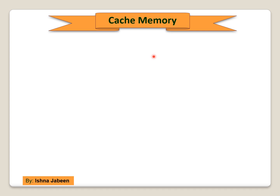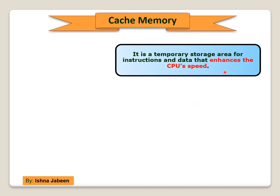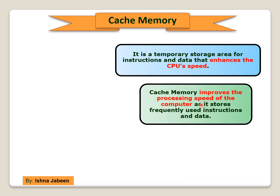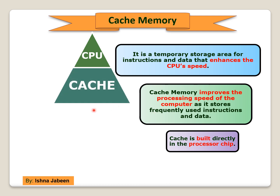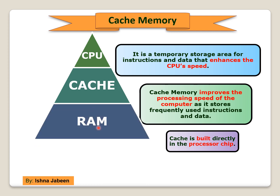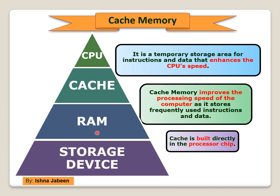Cache memory is a temporary storage area for instructions and data that enhances CPU speed. Most of today's computers improve their processing time with cache, because it stores frequently used instructions and data. Cache is built directly into the processor chip. When the processor needs an instruction or data, it first searches cache. If not found there, it searches RAM. If still not found, it must search a slower storage device such as a hard disk or CD-ROM.